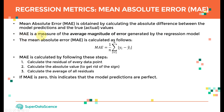MAE is a measure of the average magnitude of error generated by a regression model. The steps: first, calculate the residual for every data point; second, calculate the absolute value to make the sign always positive; third, calculate the average of all residuals by summing and dividing by N. If MAE equals zero, that means model predictions are perfect — the estimates exactly match the true labels.